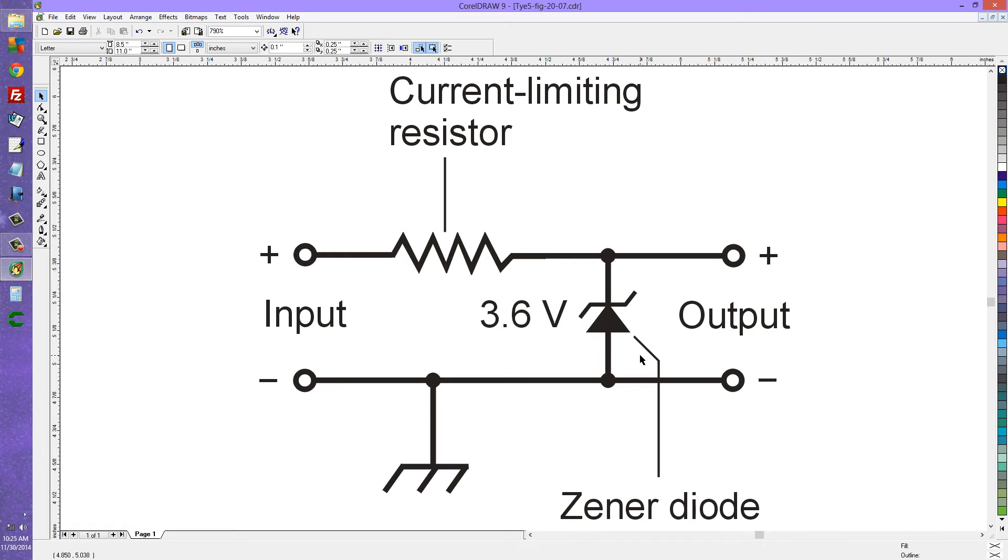It is in effect a rectifier diode connected just backwards from what you would expect with a rectifier diode. So notice that the cathode of a Zener diode generally goes to the positive polarity and the anode to the negative polarity so you are reverse biasing this thing.